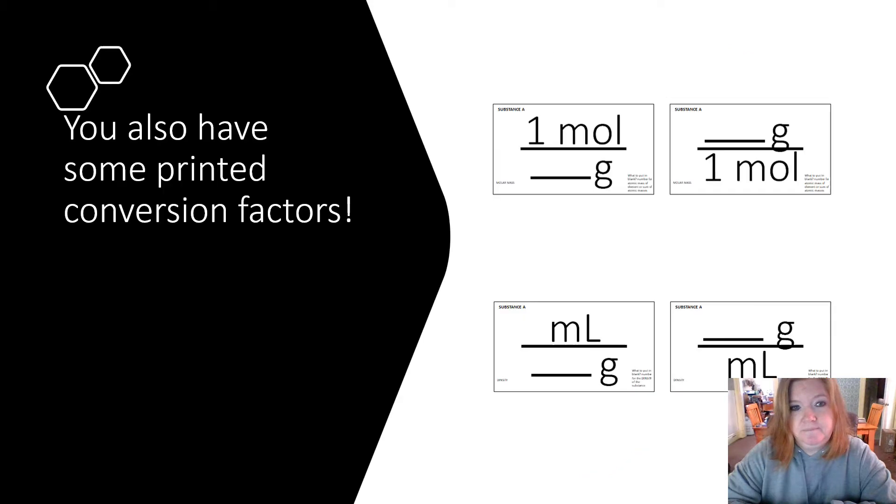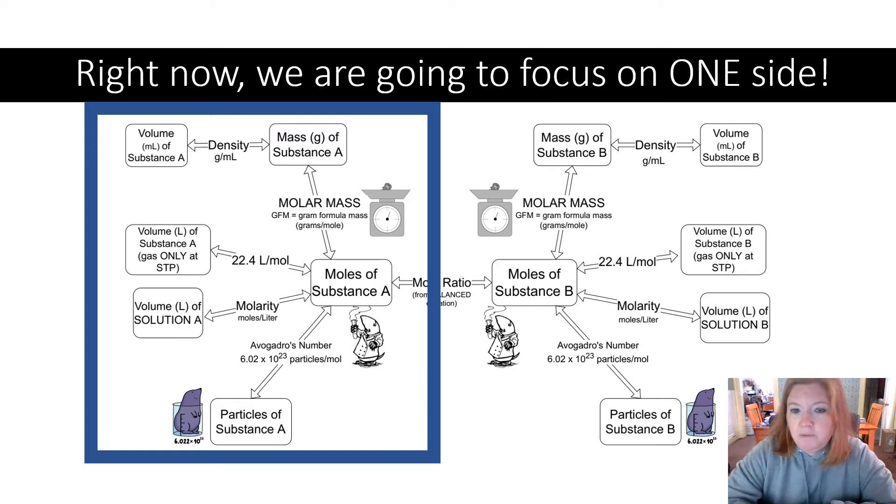So you also have some printed conversion factors, so they're double-sided which will allow you to kind of flip them around, work with them, see what you need in order to do the conversions. So right now we're going to focus on one side, so we're just going to look at one half.